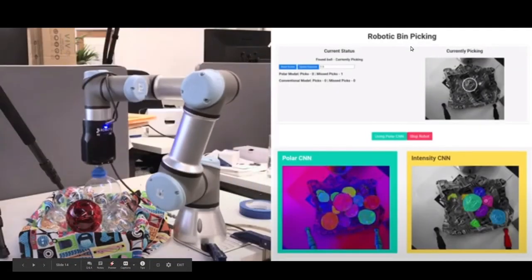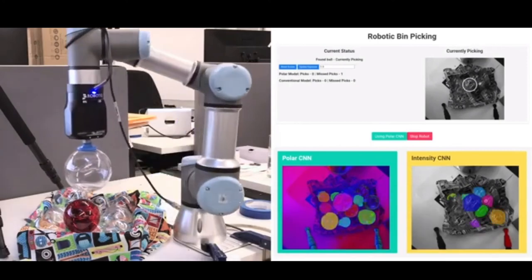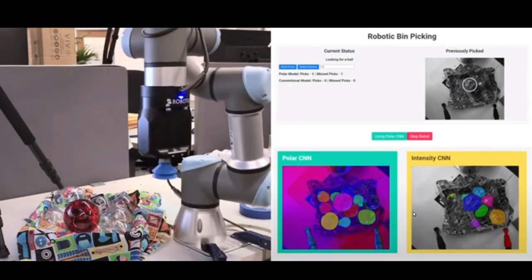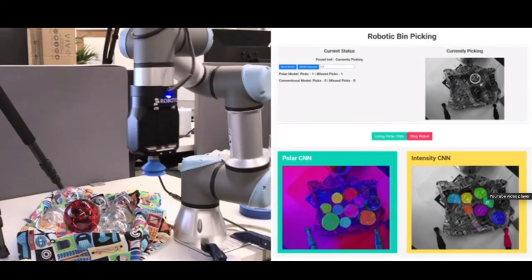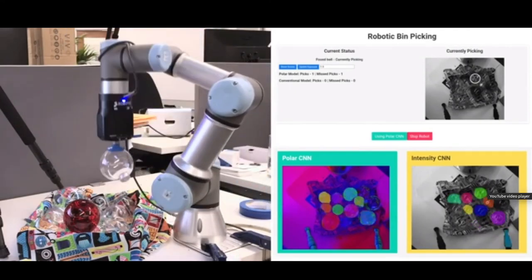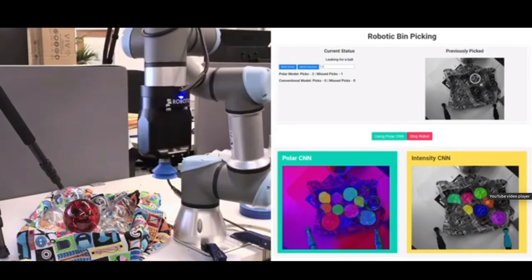Finally we actually set up a system to do robotic bin picking of transparent objects in a clutter. Again details are in the paper but the key takeaway is that our segmentation is much better than that when you use regular intensity CNNs and therefore we're able to pick an entire bin of transparent objects completely clean.